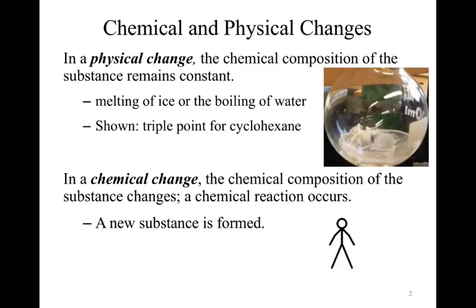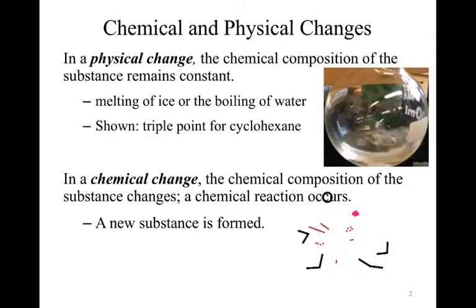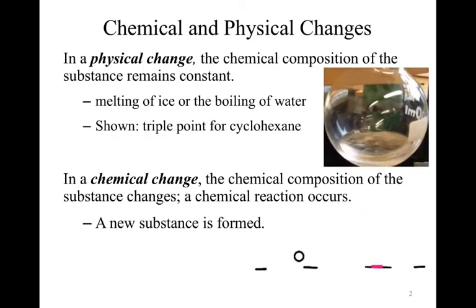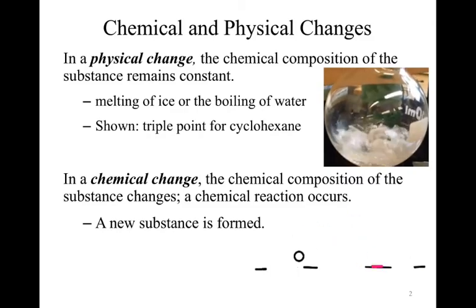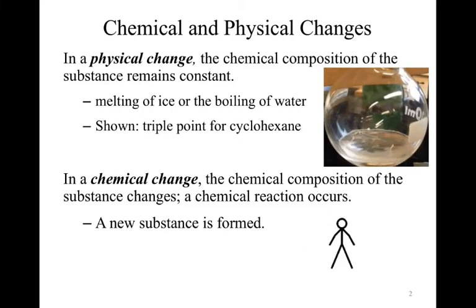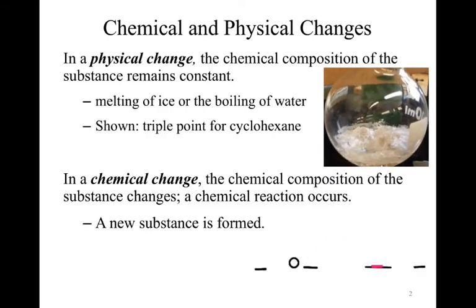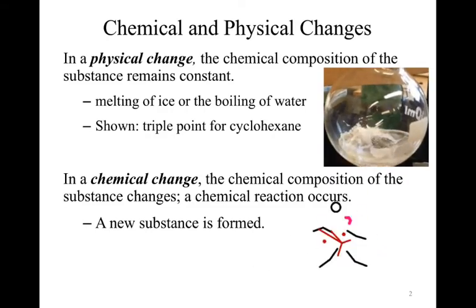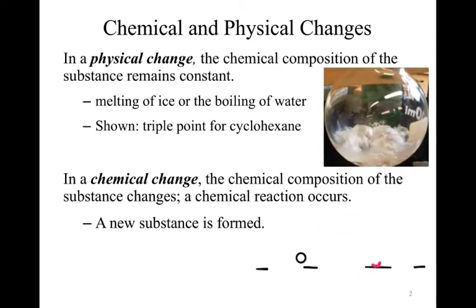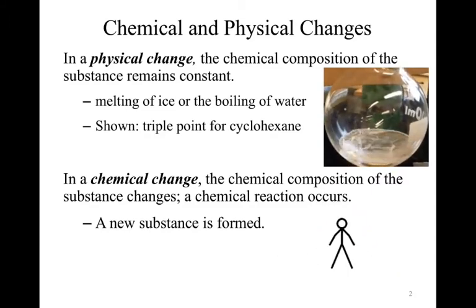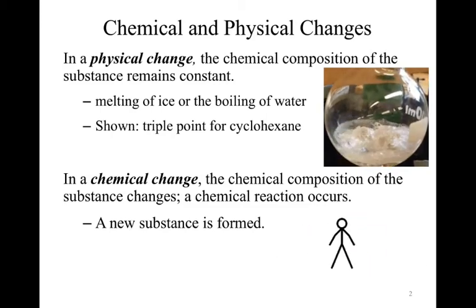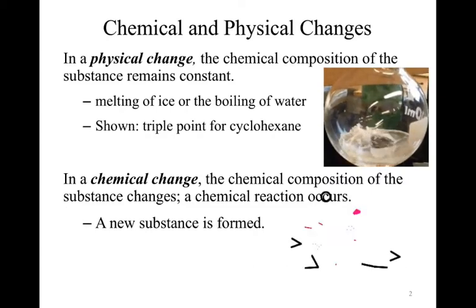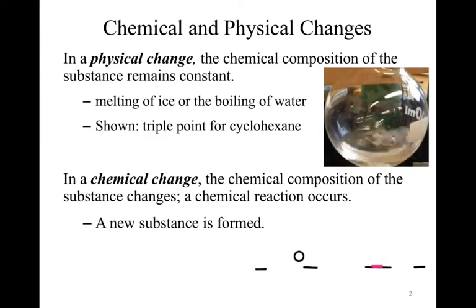So the GIF that you see there on the upper right-hand corner is actually the triple point for cyclohexane. And so what that means is that we can see the liquid and the solid and technically the gas all at the exact same temperature and officially pressure. So what we're seeing in that GIF is the substance transferring between those different phases. In each of those systems, it is the same chemical, but it appears different, either as a solid, as a liquid, or as a gas. So one of the things we have to be careful of is just because something looks like it's changed doesn't mean it actually has.